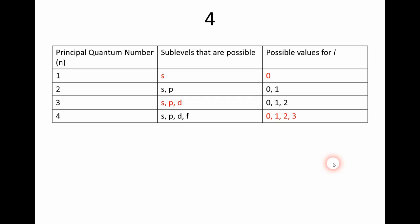Number four asks us to fill in the blanks in the following table. For the first energy level, the only sublevel possible is the S sublevel, which corresponds to an L value of zero. For N equals three, the possible L values are zero, one, and two, so the possible sublevels are S, P, and D. For the fourth energy level, the possible sublevels are S, P, D, and F, so the possible L values are zero, one, two, and three.